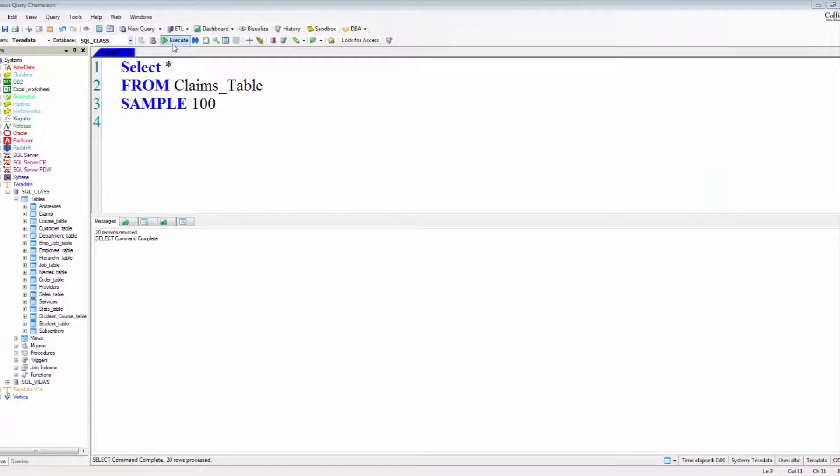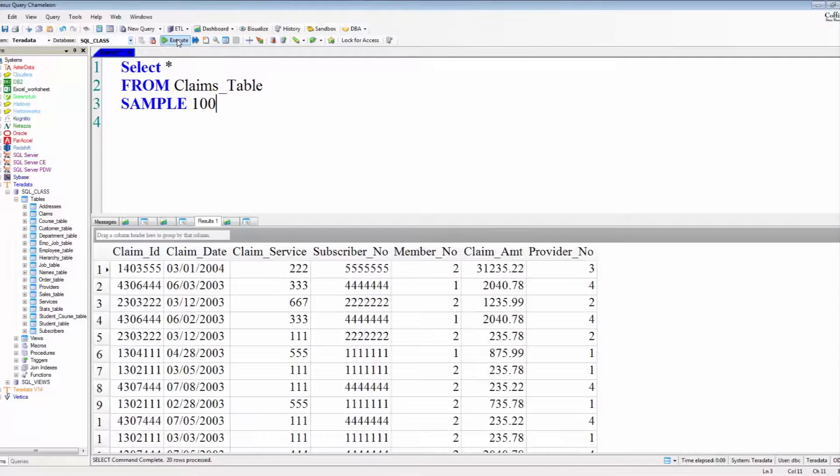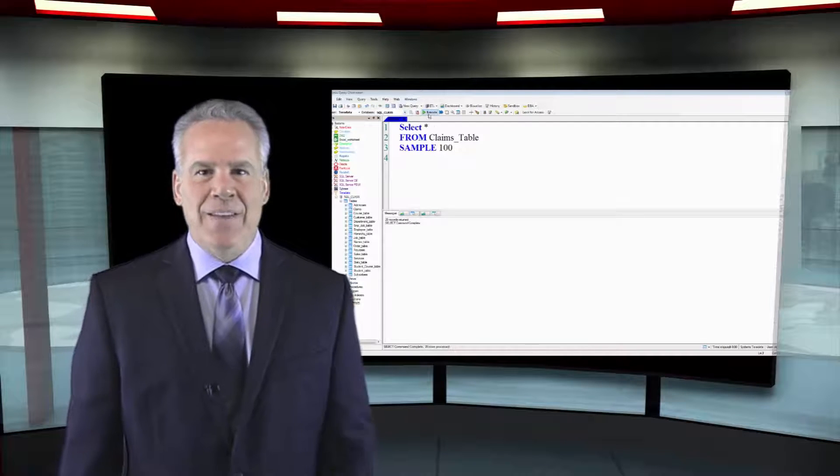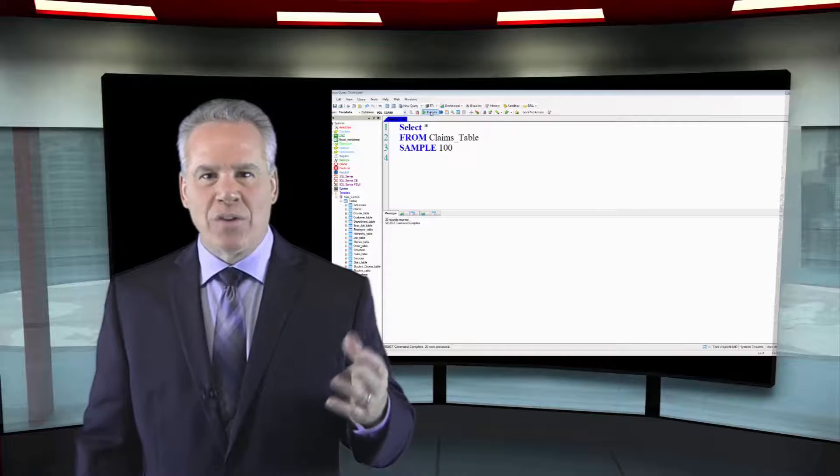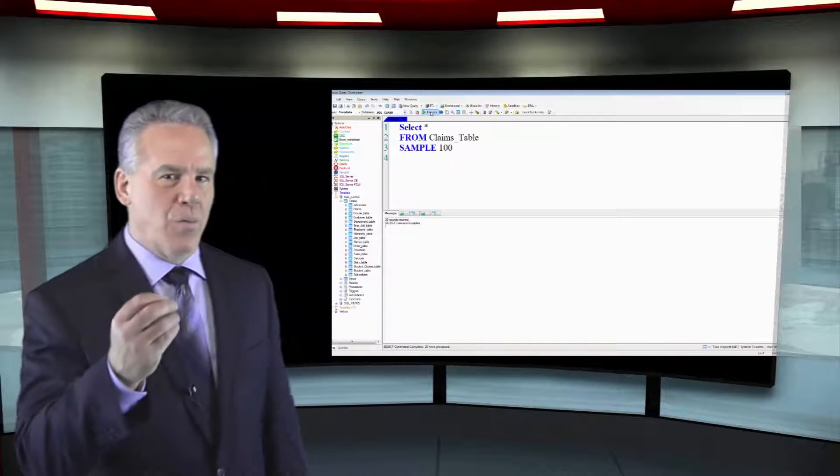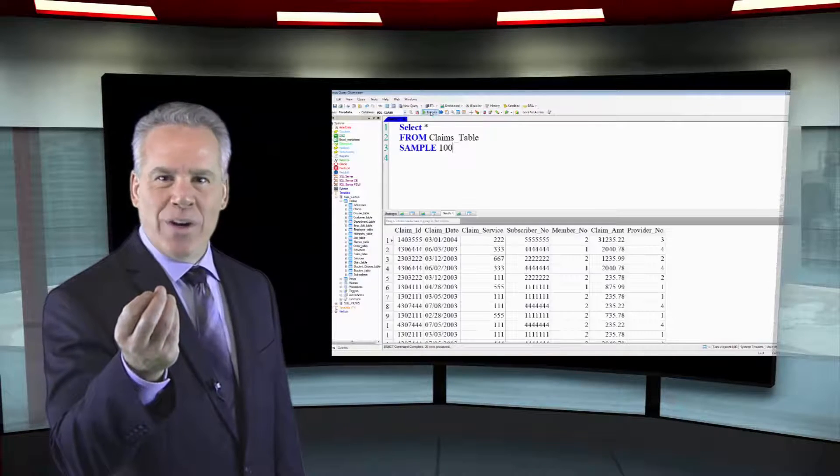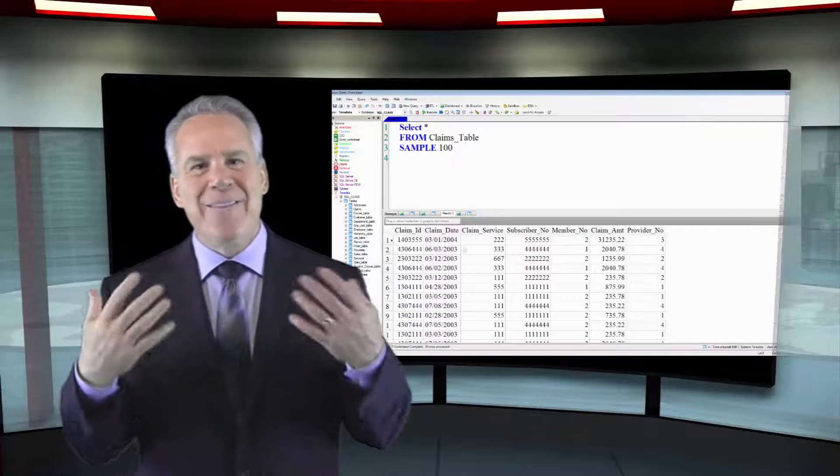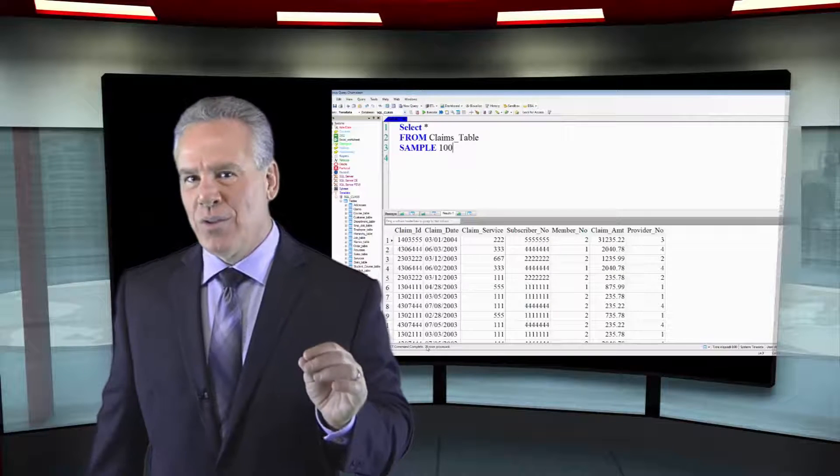I want you to imagine a table that has twenty rows and you run a query that says select everything from my table sample one hundred. How many rows are coming back? If a table only has twenty rows but I want a sample of one hundred only twenty rows can come back because we can have no duplicates when I use the sample.